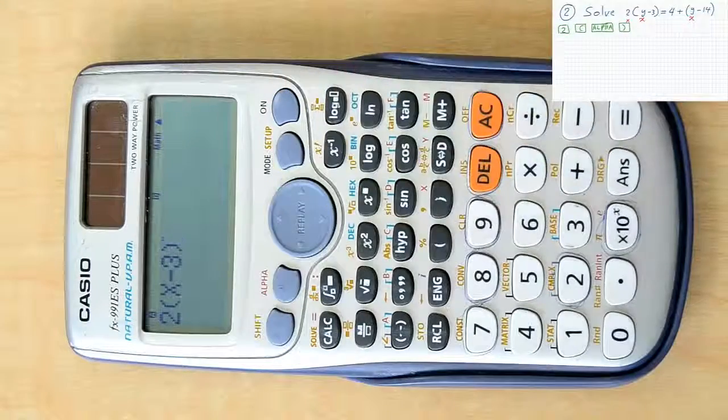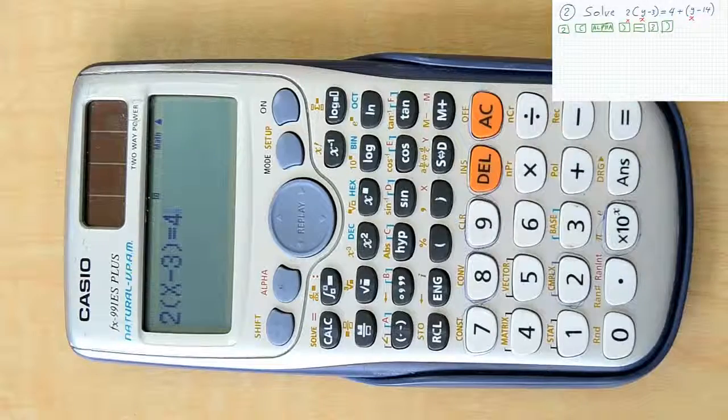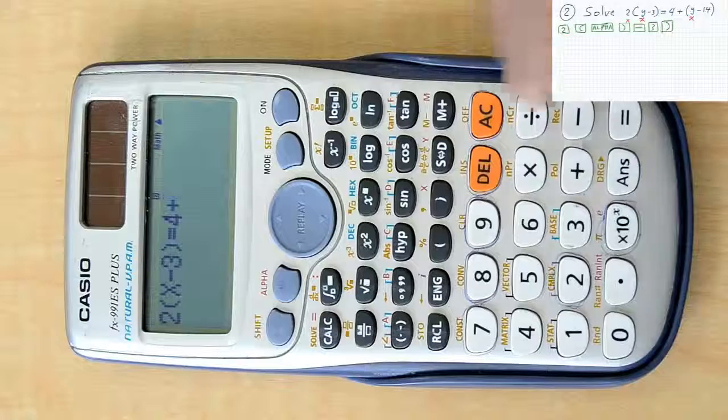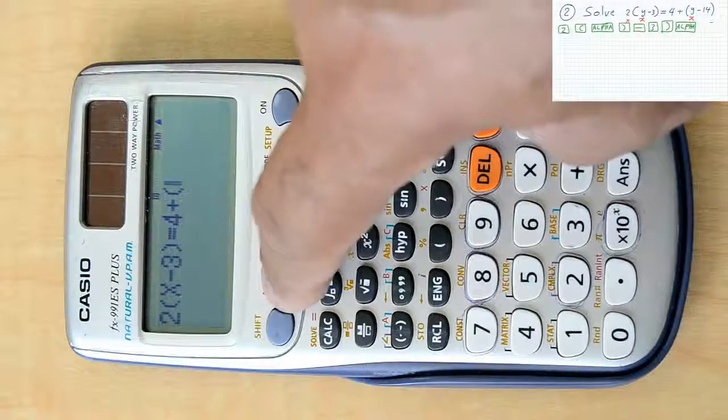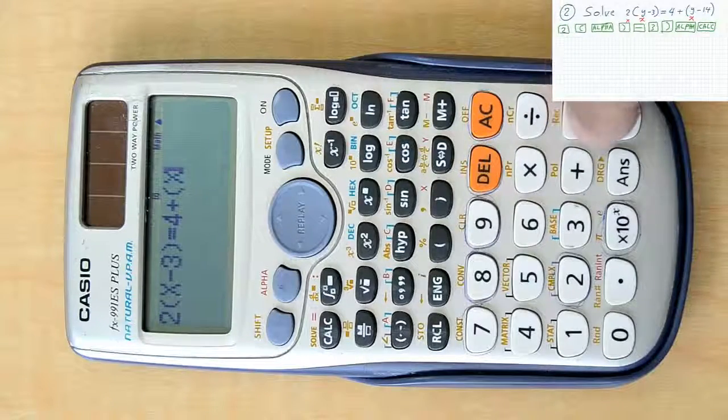Then inserting minus 3 closing parenthesis. To insert equal, we need to press alpha again, then pressing the calc button where you can find the equal sign over it.